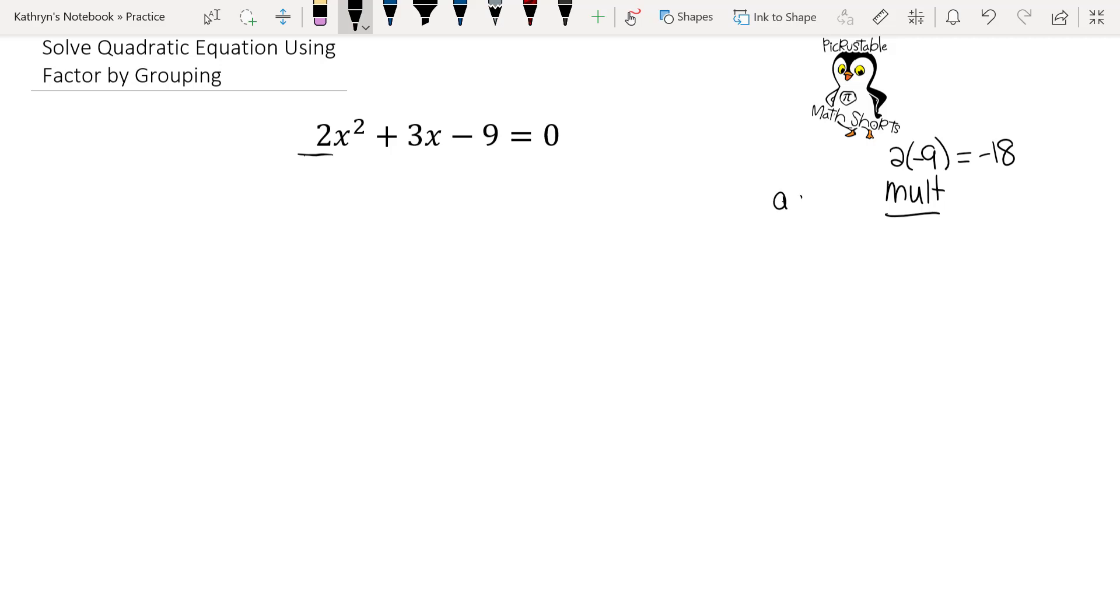So we need to multiply to negative 18, but we have to add to the middle number. So let's think of numbers that multiply to negative 18 that add to 3.